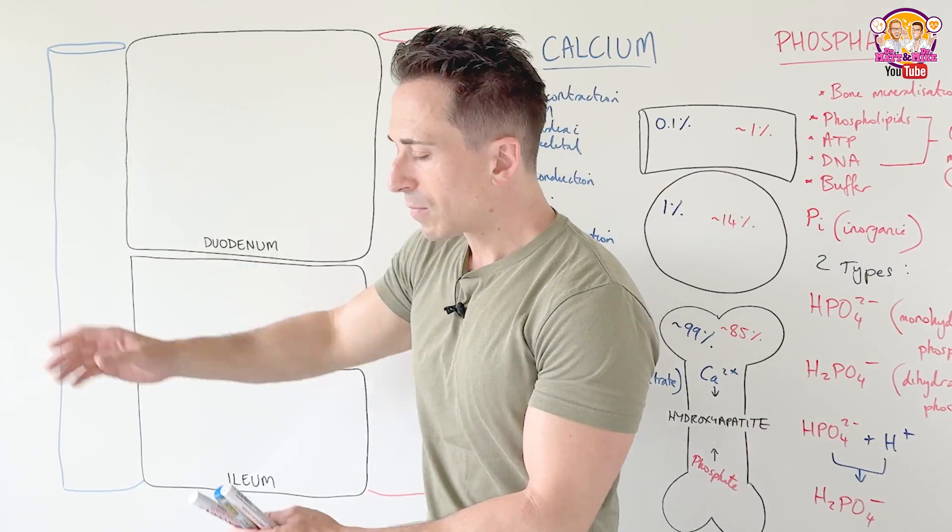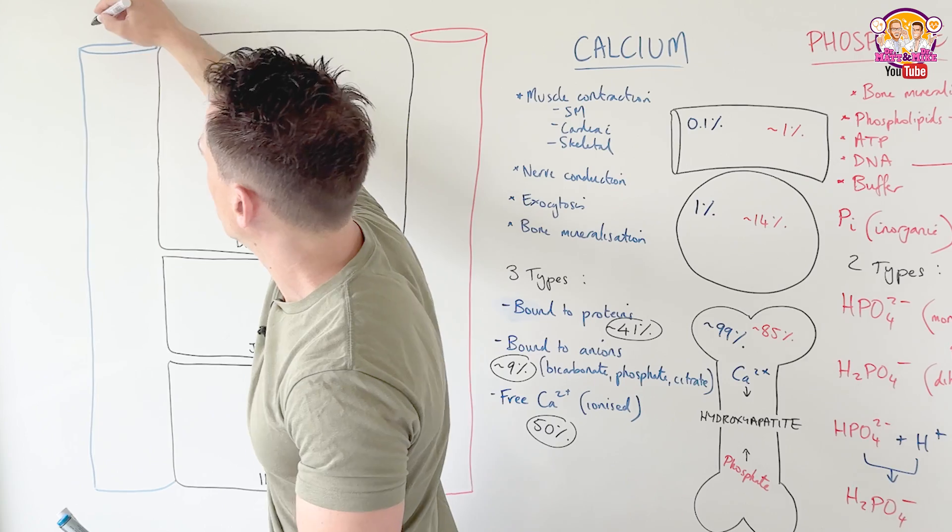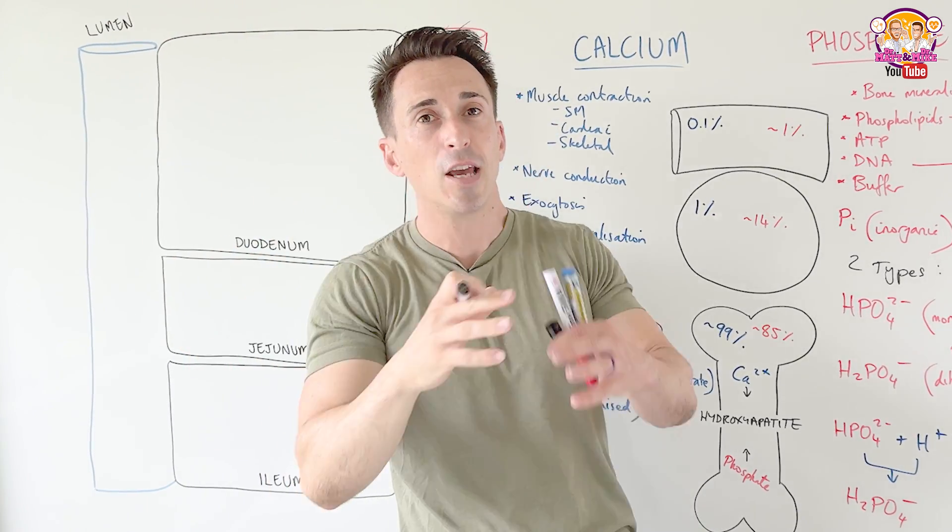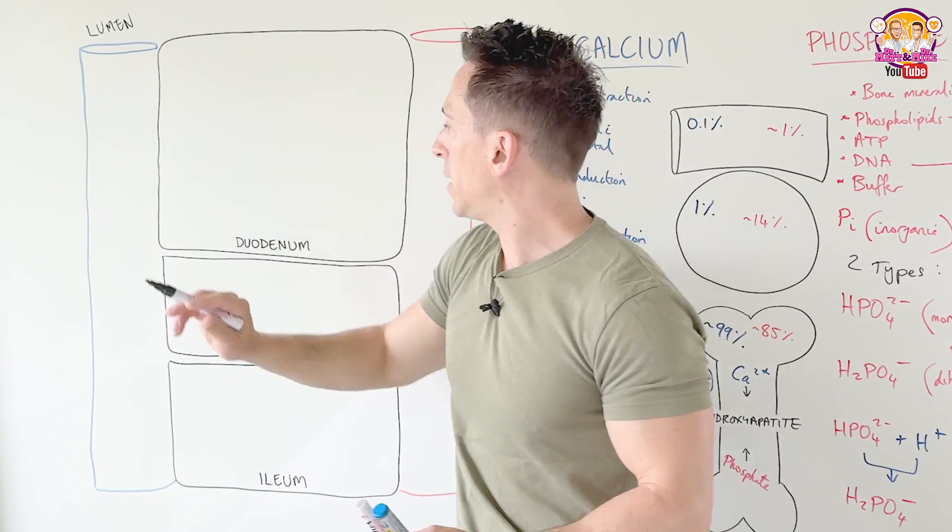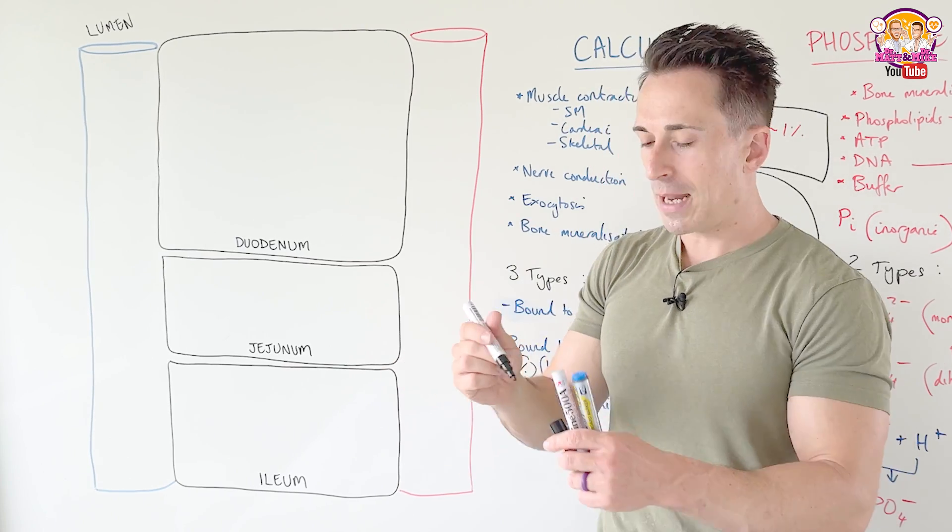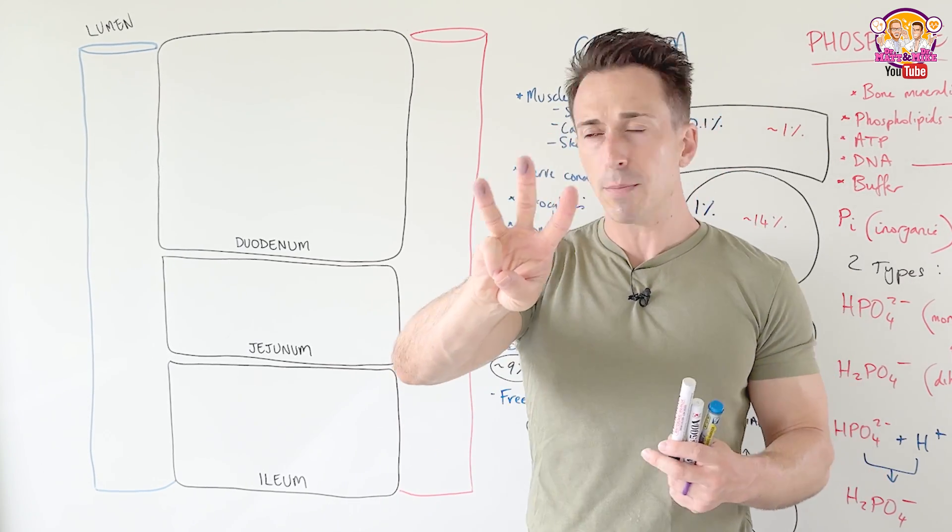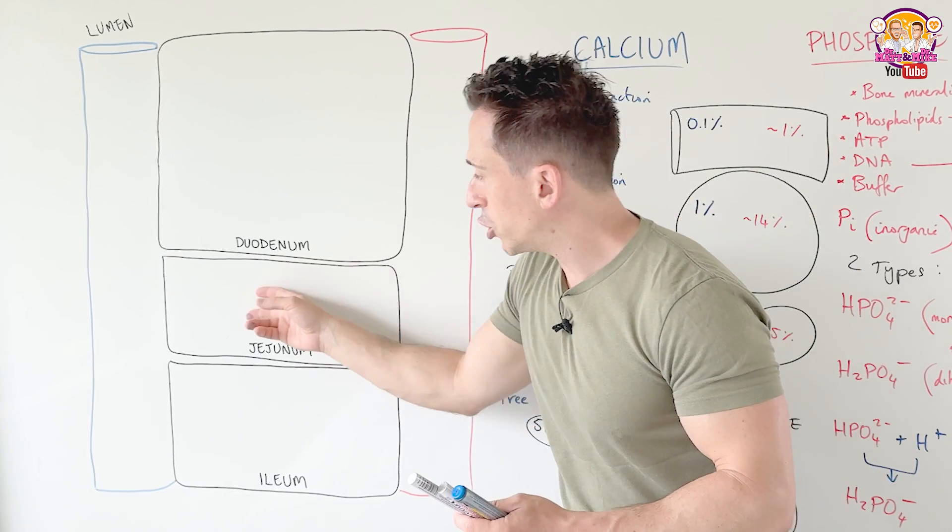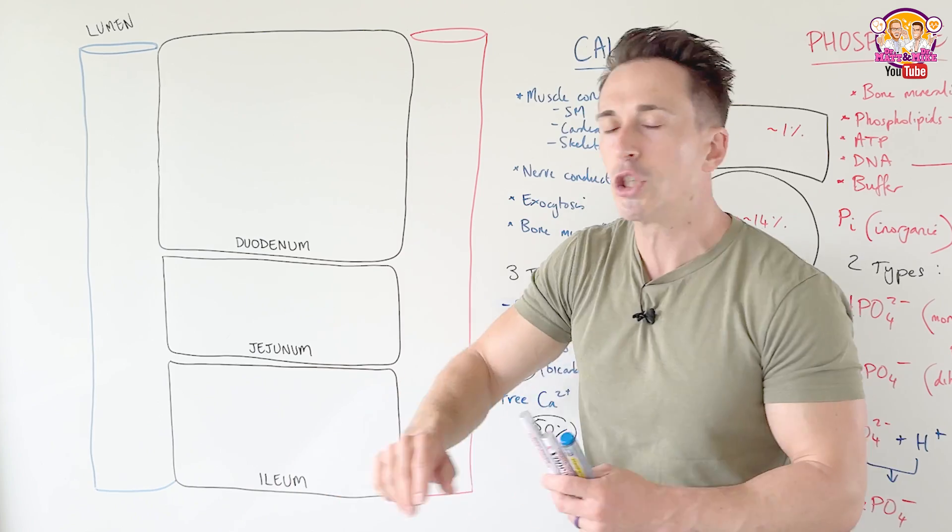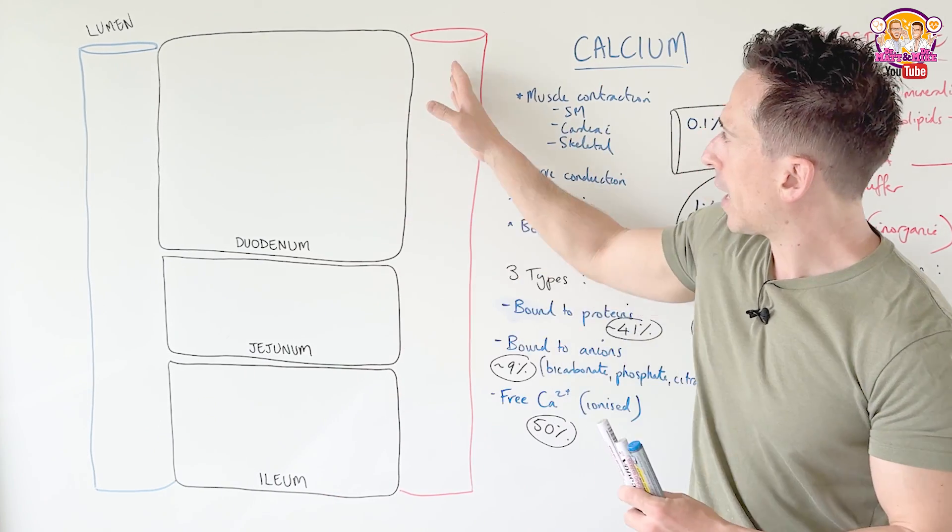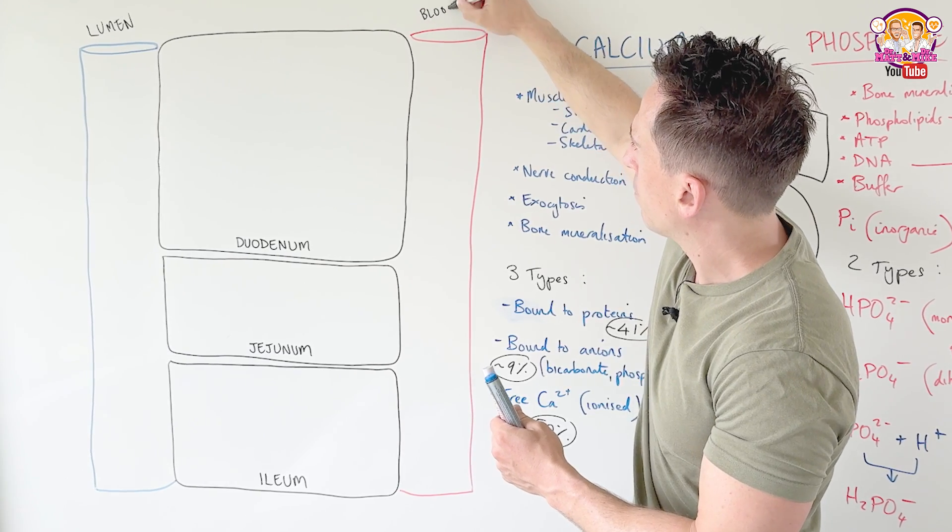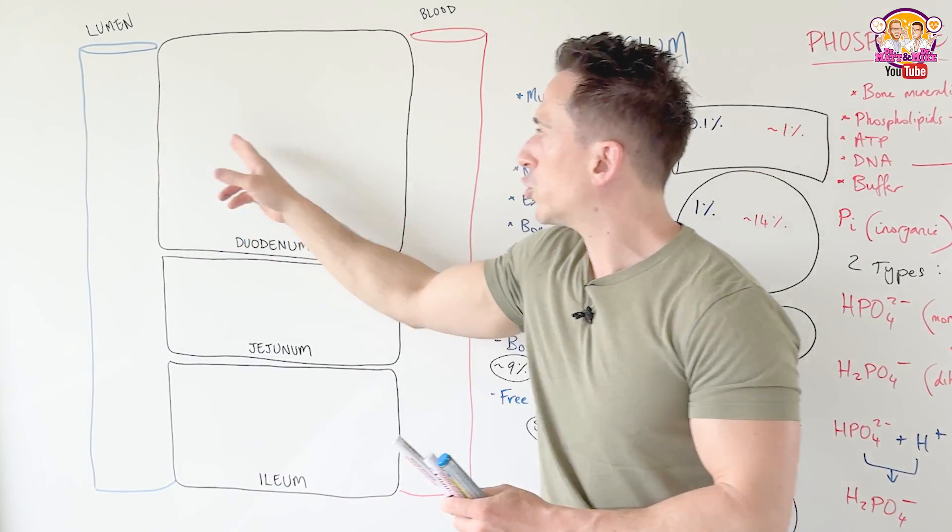So let's talk about absorption. What we've got here is the lumen of our intestines. Now you might think, what is the lumen? I always refer to the lumen in my videos. It's the hollow interior of a tube. So I've got the lumen here. Here we have our enterocytes, cells of the gut. Now, if we look at the small intestines, it's got three components: the duodenum, which is the first part, the jejunum, the second part, and the ileum. So I'm pretending that we're looking at an enterocyte from each aspect of the small intestines. And then we've got our bloodstream right here.